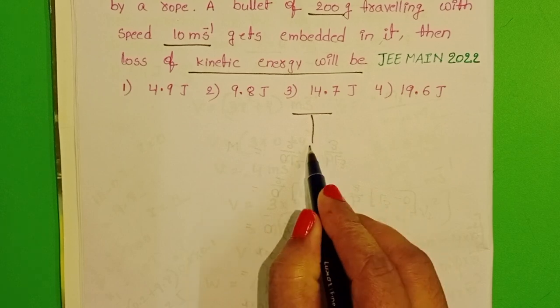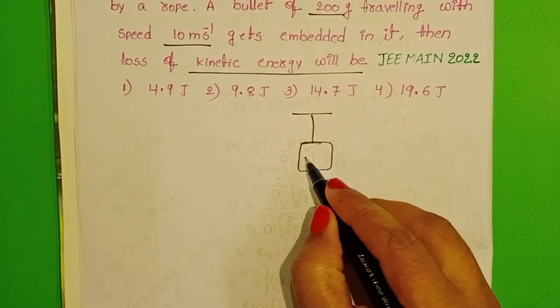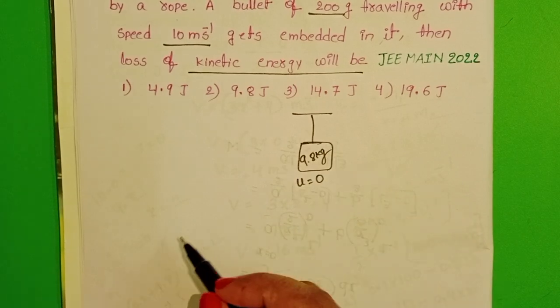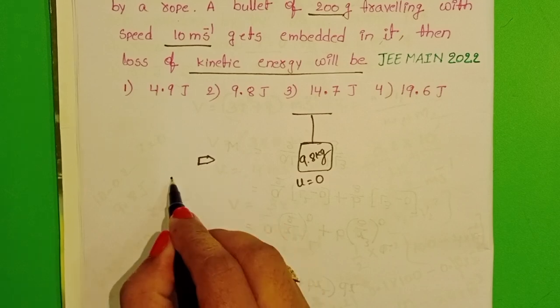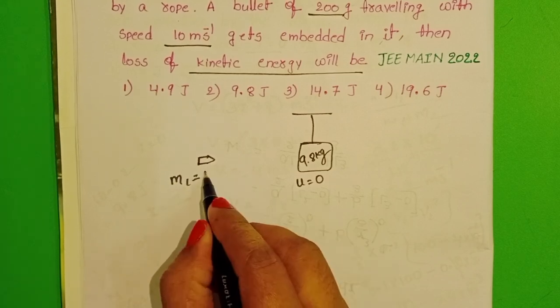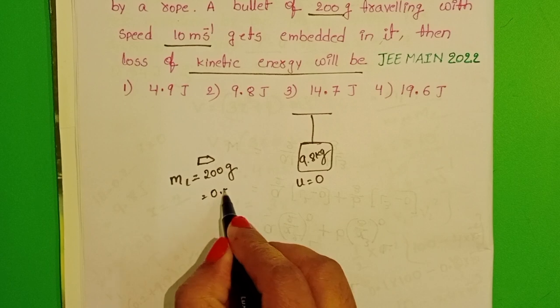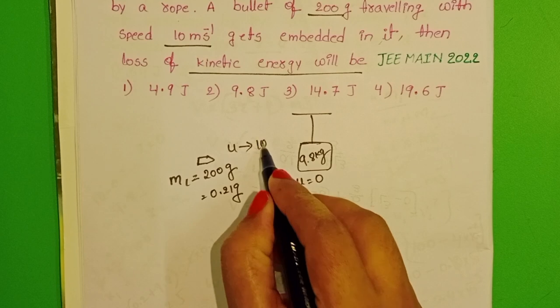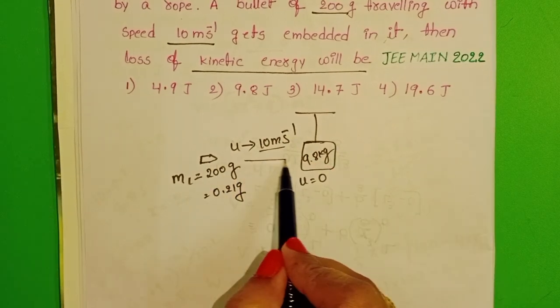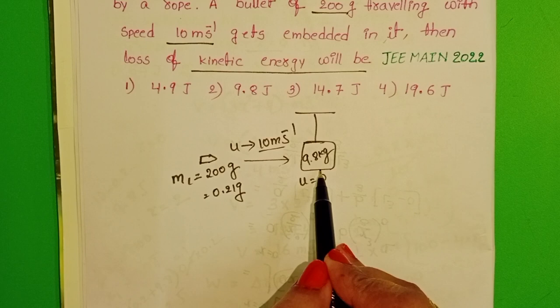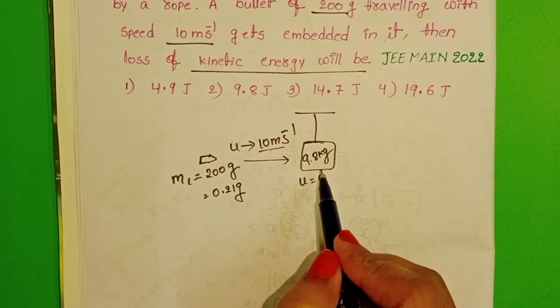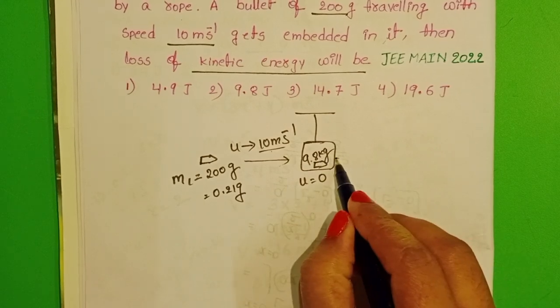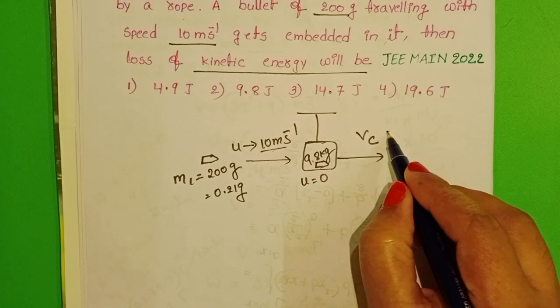In the given question, initially a sand bag of mass 9.8 kg is at rest position. A bullet of mass 200 grams, 0.2 kg, moving with a velocity of 10 meters per second strikes with this bag. After then, it is embedded in this bag. That means these two are moving with common velocity.